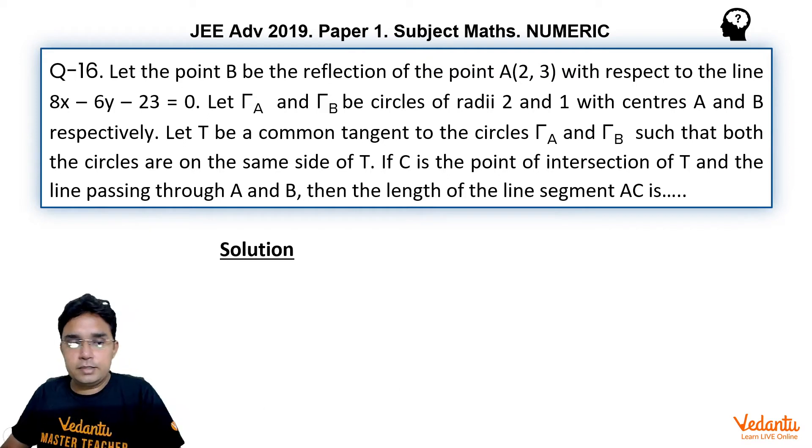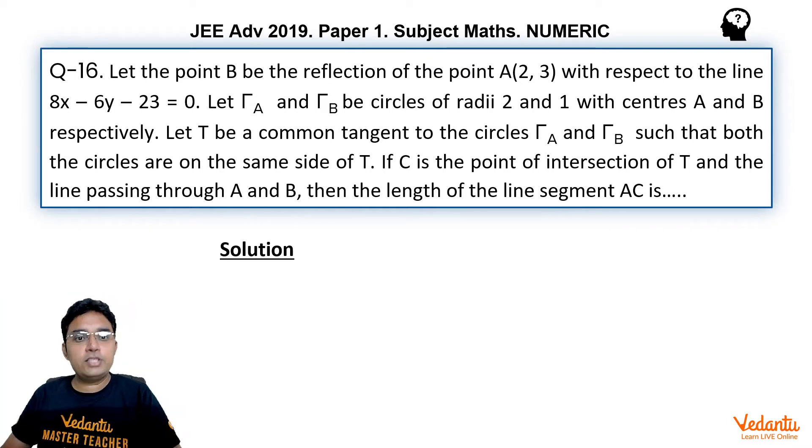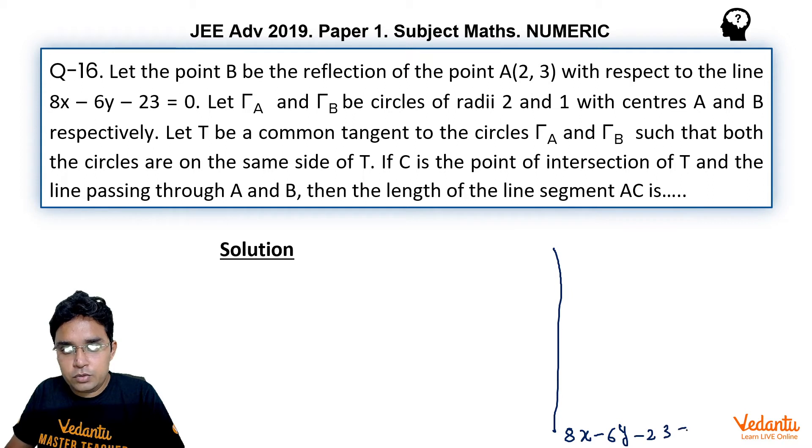So here there are two things. One that you are given reflection of A with respect to a line and let us say this line is like this and its equation is 8x minus 6y minus 23 equal to 0 and here we have point A whose reflection in this line is B which means perpendicular distance of A from this line and perpendicular distance of B from this line will be same and let us say it is D.